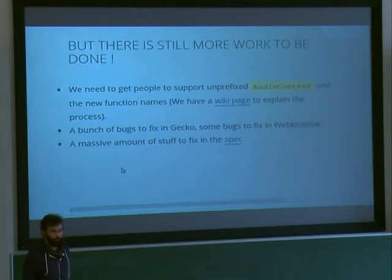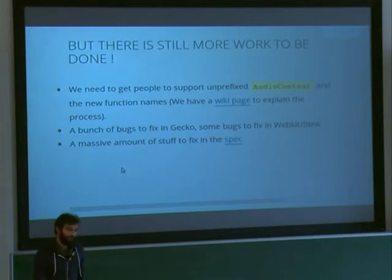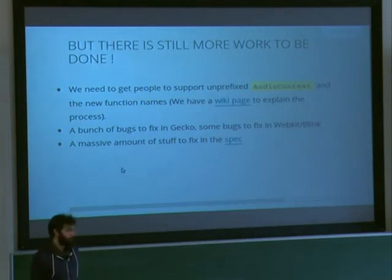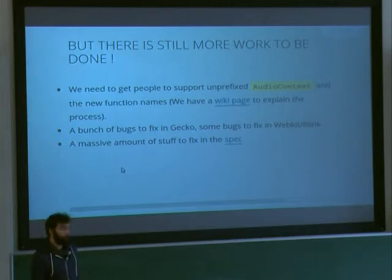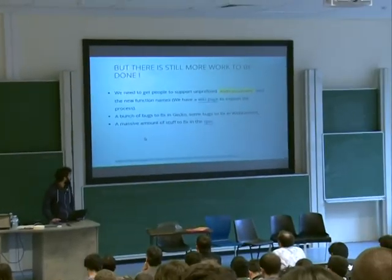The issue is naming problems — the engine works perfectly but demos don't call the right function names, so they don't work in Firefox. I'm personally crawling GitHub and opening issues on people's projects saying 'your demo is great but it doesn't work in Firefox, just do this and it will work,' and most of the time they fix it because people are nice. There are exactly 96 bugs to fix in Gecko, some bugs to fix in WebKit/Blink because we changed the spec, and a massive amount of stuff to fix in the spec itself because it's far from done.